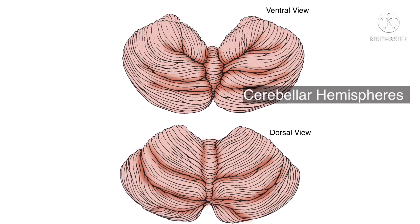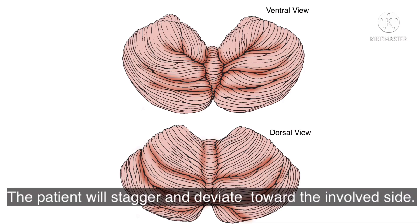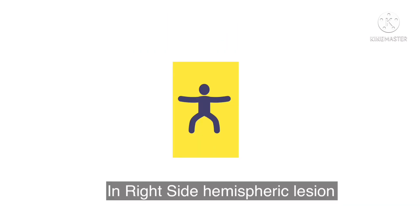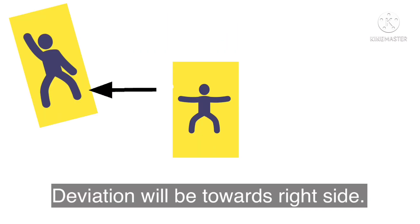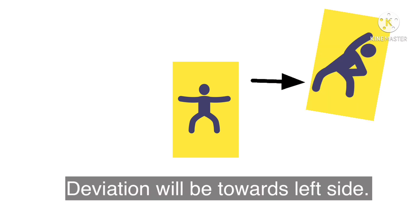In lesions of the Cerebellar Hemispheres, the patient will stagger and deviate towards the involved side. For example, if there is a lesion on the right side of the Cerebellar Hemisphere, the patient will deviate towards the right side. And if the lesion is in the left Cerebellar Hemisphere, the patient will tend to deviate towards the left side while walking.